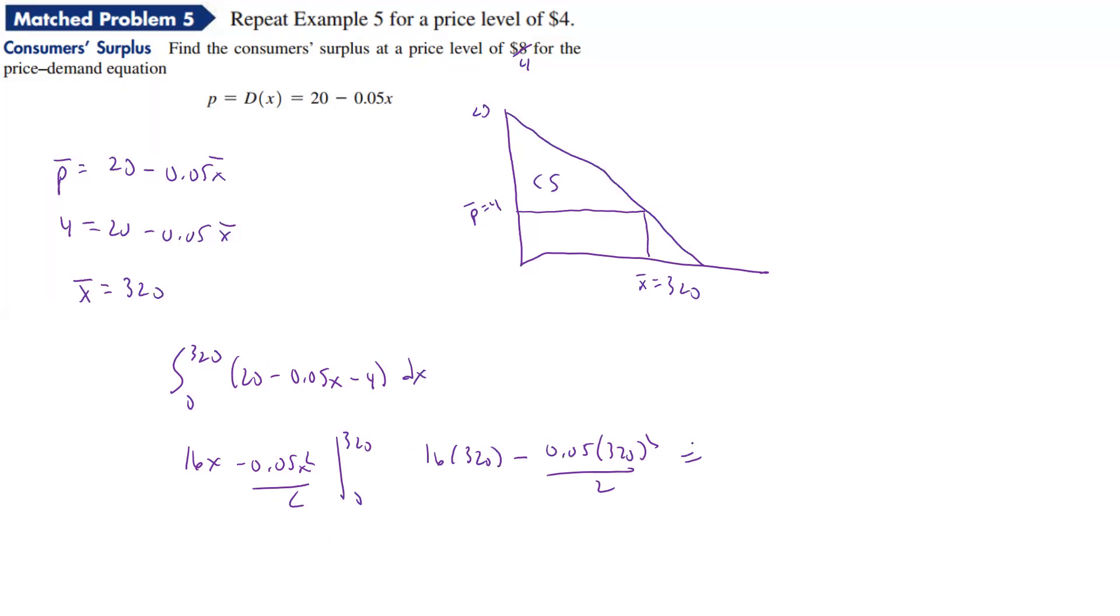And we get 2560 is going to be the consumer surplus. So that's how much they're saving there. And that's by paying this price, even though they'd be willing to pay all the way up to here. So that's kind of the key in this one. All right, so let's stop there. We'll come back for some more.